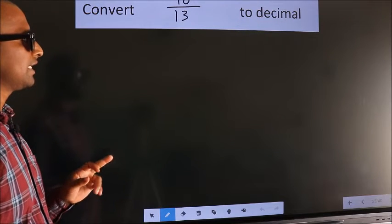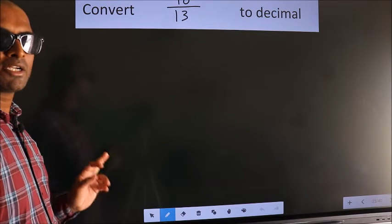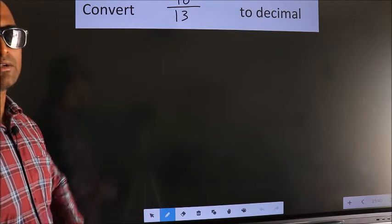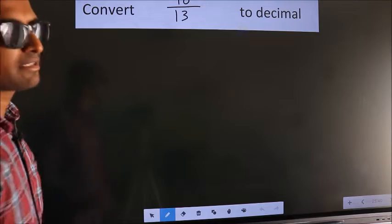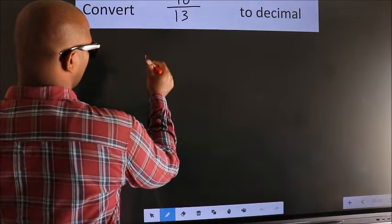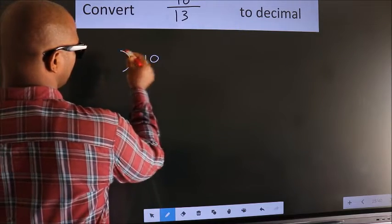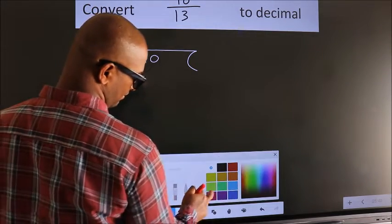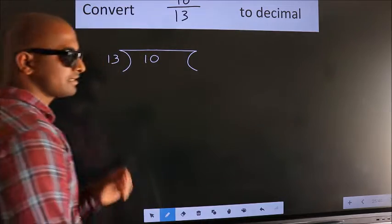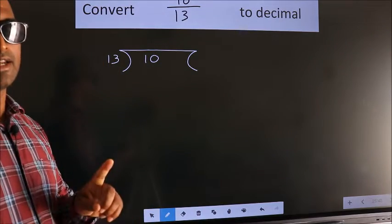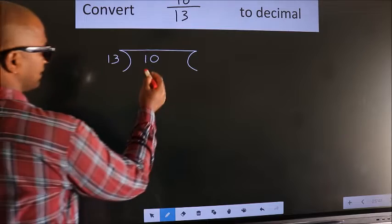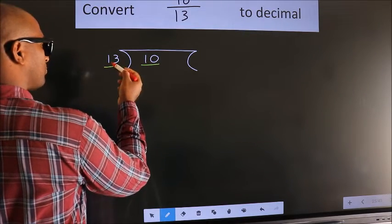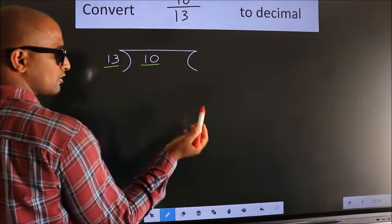Convert 10/13 to decimal. To convert this to decimal we have to divide, and to divide we should frame it in this way: 10 here, 13 here. This is step 1. Next, here we have 10 and here 13.